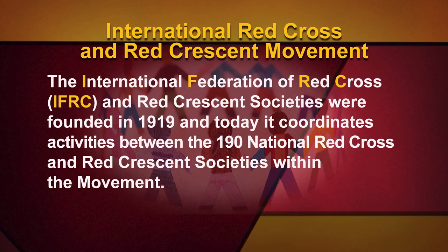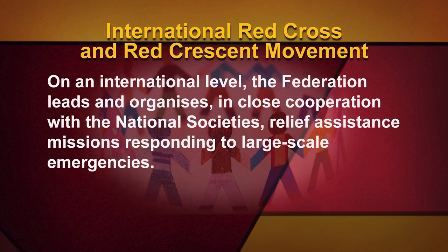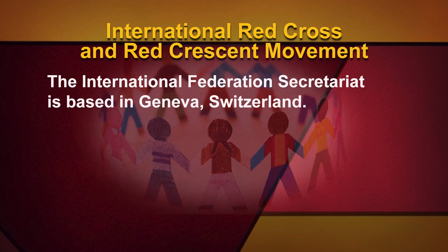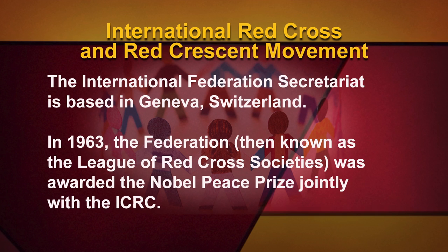The International Federation of Red Cross and Red Crescent Societies was founded in 1919 and today it coordinates activities between 190 National Red Cross and Red Crescent Societies within the movement. On an international level, the federation leads and organizes, in close cooperation with the national societies, relief assistance in response to large-scale emergencies. The International Federation Secretariat is based in Geneva, Switzerland. In 1963, the federation, then known as the League of Red Cross Societies, was awarded the Nobel Peace Prize jointly with the ICRC.